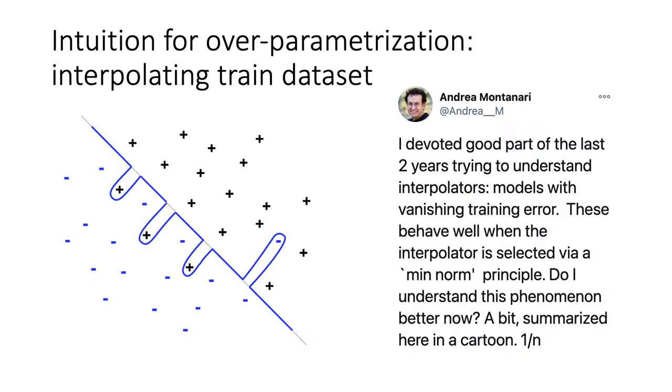What's the intuition for overparameterization? Professor Andrea Montanari from Stanford has this great cartoon that explains neural nets with the ability to achieve zero training error are interpolators. They interpolate the entire training dataset to have zero training error. Among all such interpolators, SGD successfully finds a minimal norm solution in some abstract sense, so that you can have a regularized function that also generalizes.